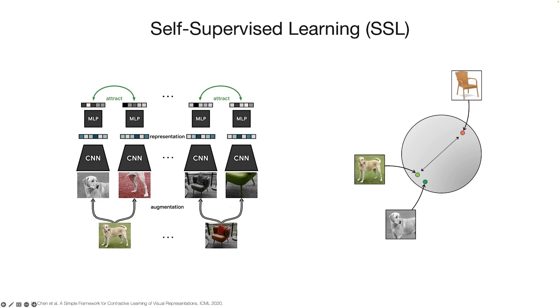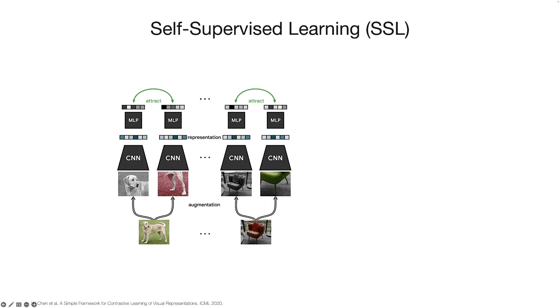The core idea is to encourage a pair of similar samples to be close in the representation space while simultaneously driving distance between negative pairs. Here, positive pairs are often created via data transformations. If we take a close look, the overall framework can be dissected into three parts.